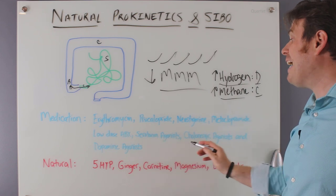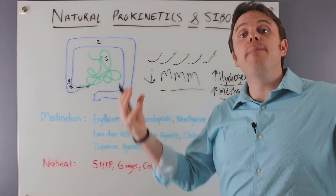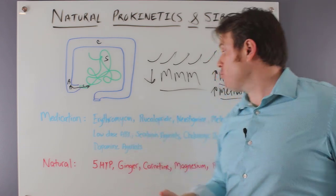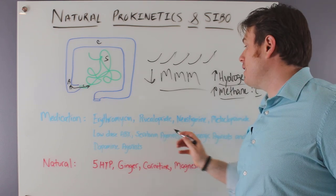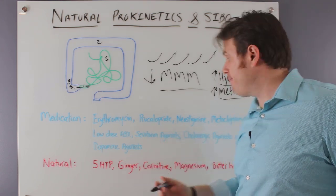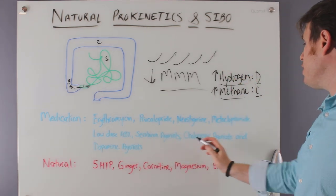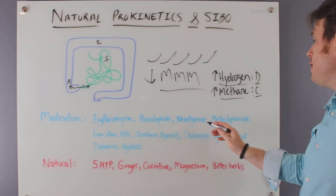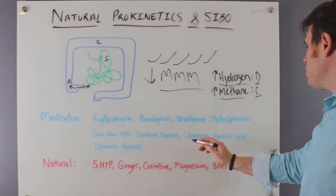We have serotonin agonists. Agonists means they stimulate that serotonin receptor site. And that's prucalopride is one of those medications. We also have cholinergic agonists, like neostigmine. Neostigmine is a cholinergic agonist.